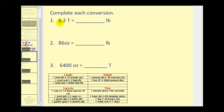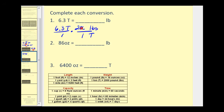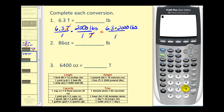Now dealing with weight: on number one, we want to convert tons to pounds. Write six point three tons over one in fraction form. Looking at the table, one ton is equal to two thousand pounds. Since we want tons to simplify out, we put tons in the denominator and pounds in the numerator. The conversion is one ton equals two thousand pounds. Tons simplify out, leaving a numerator of six point three times two thousand pounds. Multiplying gives us twelve thousand six hundred pounds.